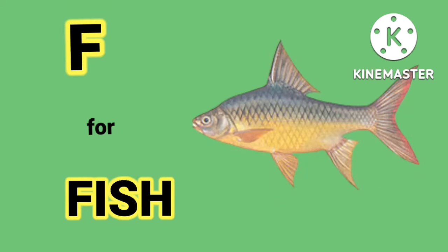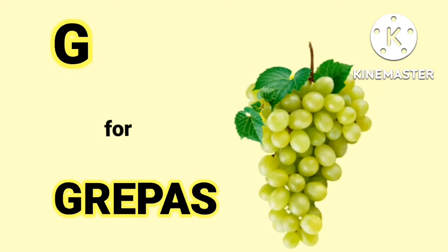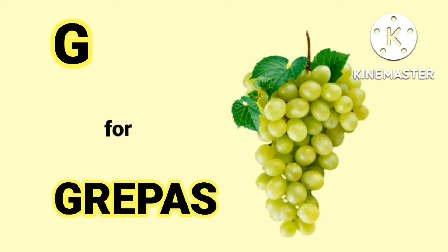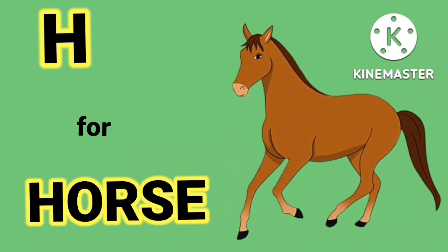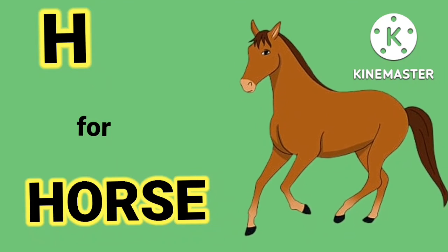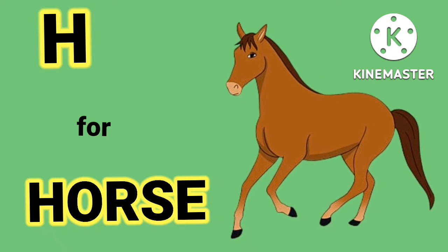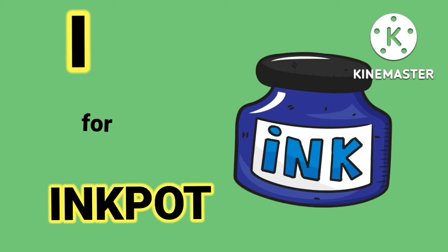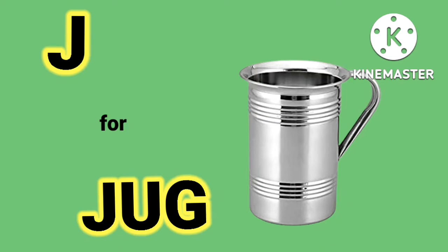F for fish, fish means machli. G for grapes, grapes means anggur. H for horse, horse means bhoda. I for inkpot, inkpot means shahi ki dhuat.